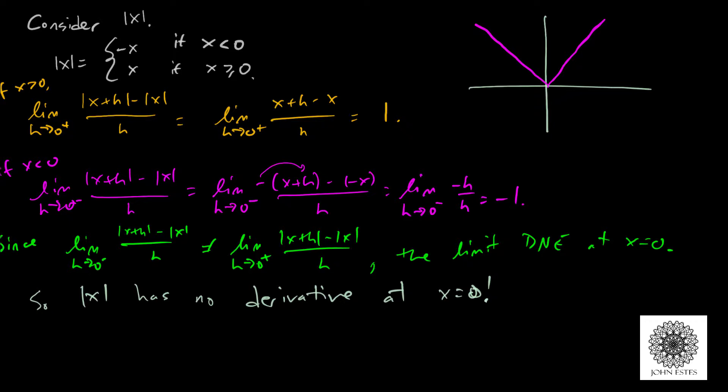And so on the right-hand side, this v-shape has a slope of positive 1. On the left-hand side, this v-shape has a slope of negative 1.